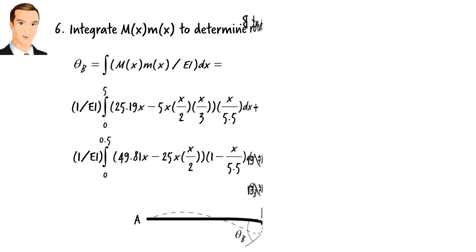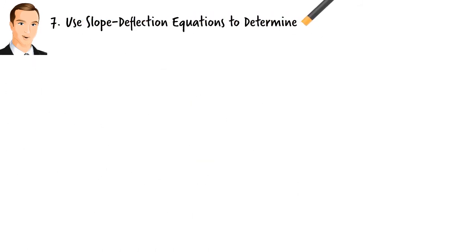Now that we have the two slope values, we substitute them in the slope deflection equations to determine the fixed end moments.